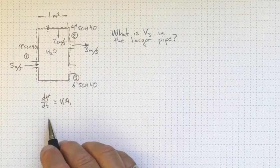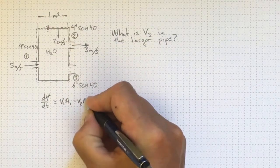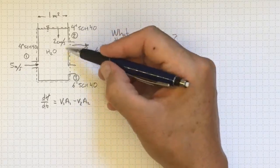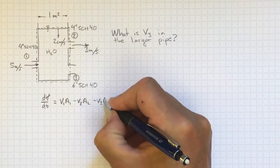Minus what's going out V2 A2 and whatever's going out at 3 minus V3 A3.